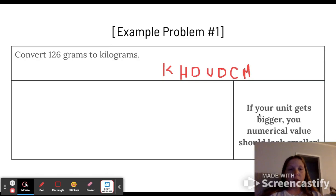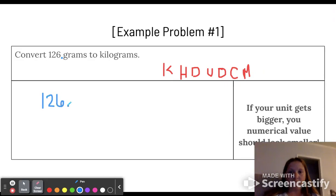We're gonna convert from one to another. If your unit gets bigger, your numerical value should look smaller. We've got a decimal here at the end of the number. I'm gonna rewrite this: 126, and we're gonna put that decimal right there at the end. We are going from grams, which is represented by that U for unit, to kilograms. So we're going from a small unit to a bigger unit, and we're moving one two three to the left.